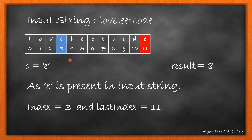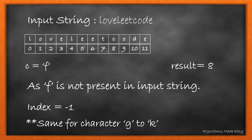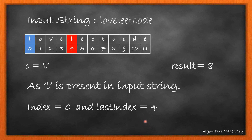Coming to E, we can see it occurs more than once. Its first occurrence is at index 3 and the last occurrence is at 11. Since both of these differ, we will not update the result variable. Characters F to K are not present in the string, so we will move ahead. Coming to L, we can see that its first index is 0 and last index is 4, so as these are unequal, we move forward without updating the result.